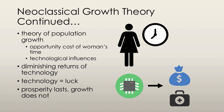Technological advances bring higher income and also bring advances in health care and extend lives. So as income increases, the birth and death rate actually decrease, and this slows down population growth.